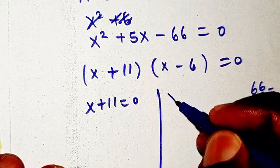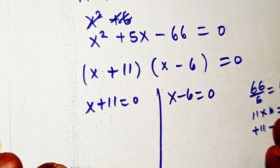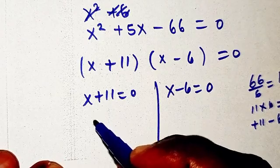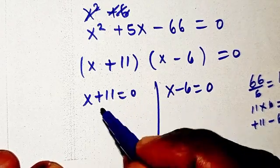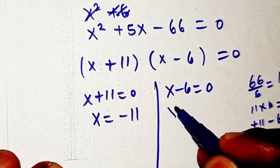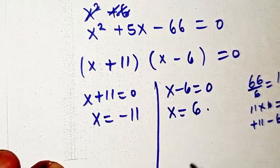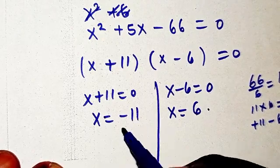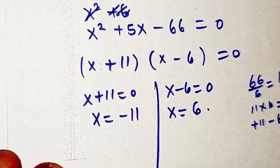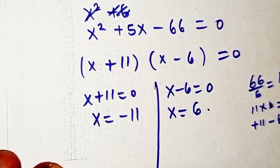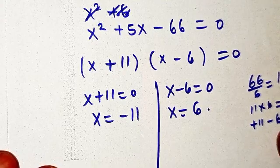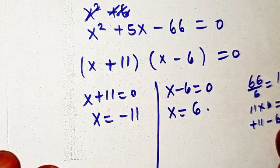From that equation we get two linear equations: x plus 11 equals zero, giving x equals minus 11, and x minus 6 equals zero, giving x equals 6. So we have two possible solutions. But we cannot stop there — this is a factorial problem, so we need to check which one is the valid solution.